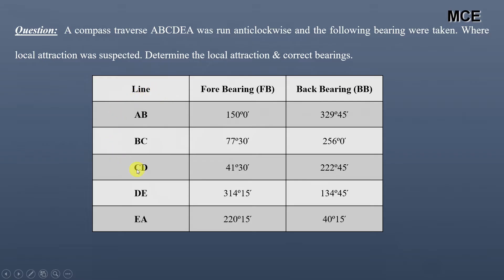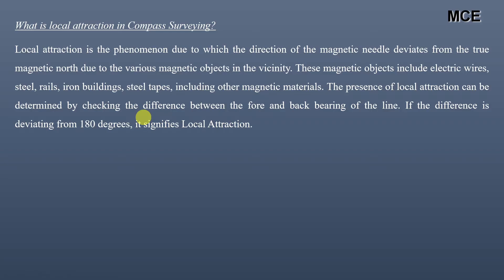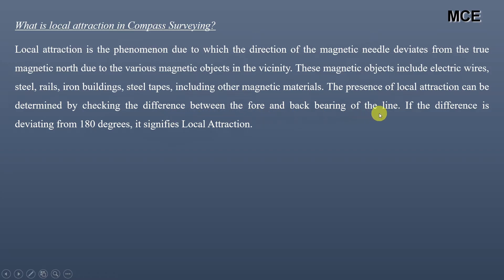First, what is local attraction? Local attraction in compass surveying is a phenomenon in which the direction of the magnetic needle of the compass deviates from the true magnetic north due to the presence of various magnetic objects in the vicinity. These magnetic objects can include electric wires, steel rails, iron buildings, steel tapes, and other magnetic materials. The presence of local attraction can be determined by checking the difference between the fore and back bearing of a line. If the difference deviates from 180 degrees, it signifies that local attraction is present at that particular station.